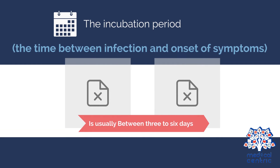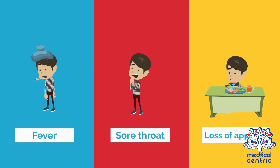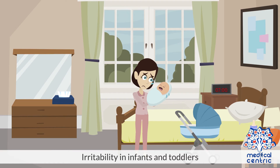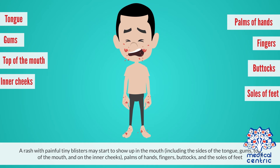The incubation period — the time between infection and onset of symptoms — is usually between three to six days. Symptoms include fever, sore throat, loss of appetite, and irritability in infants and toddlers. Painful facial ulcers or lesions may also develop in or around the nose or mouth. A rash with painful tiny blisters may appear in the mouth, including the sides of the tongue, gums, top of the mouth, and inner cheeks, as well as the palms of hands, fingers, buttocks, and soles of feet.